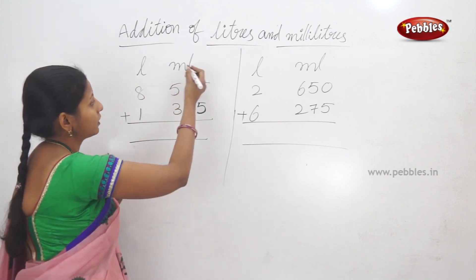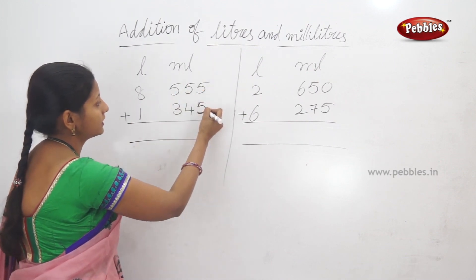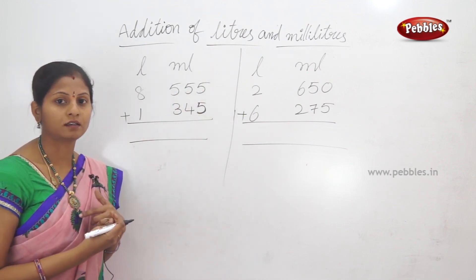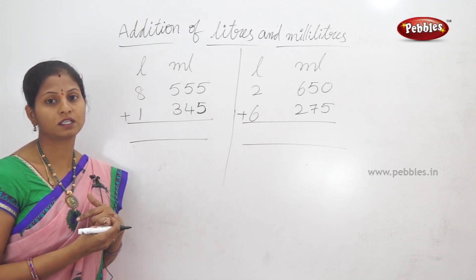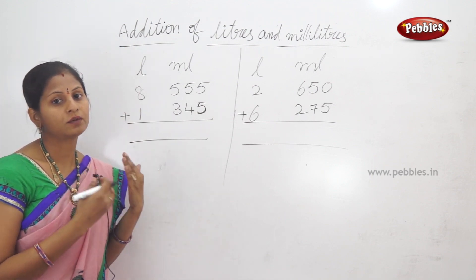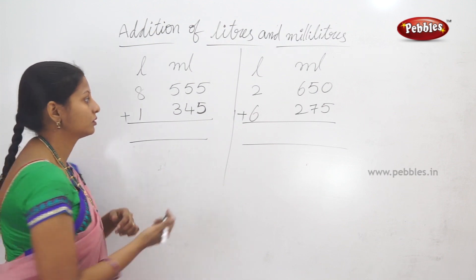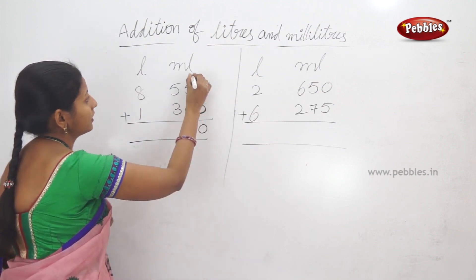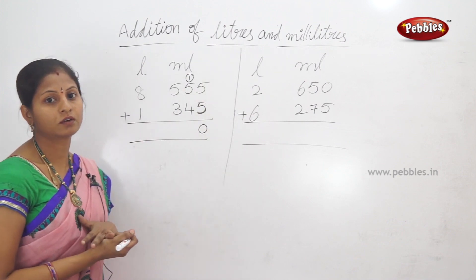It means 8 liters 555 milliliters plus 1 liter 345 milliliters. First, addition starts with milliliters. Ones place: 5 plus 5 equals 10. Two digits, so we carry over — write 0, carry 1.